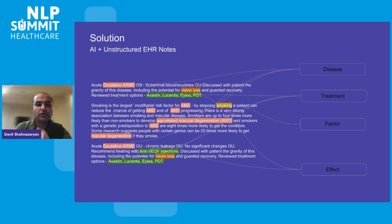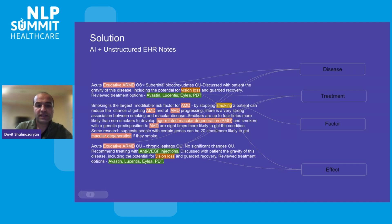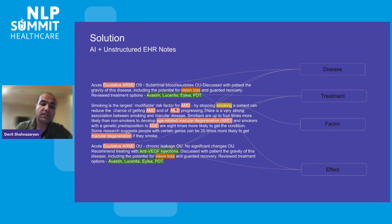On the left you can see different notes created by doctors in real world healthcare settings. As we can see, this is in an unstructured form. There is a lot of information that can be extracted from these notes. What we are doing is extracting different medical entities — for example, exudative AMD, which is the disease. There are different types of medical entities: treatment, factors, effects — all of those are being extracted from the medical notes to generate insights, using machine learning techniques, more specifically large language models.